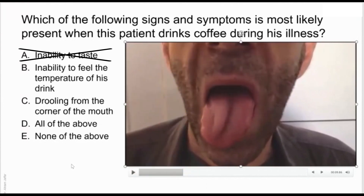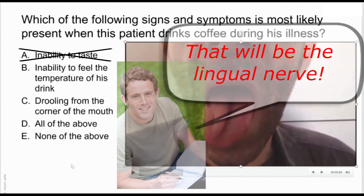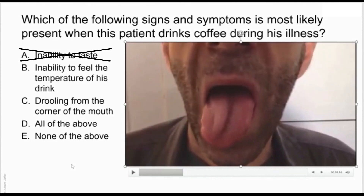Option B: inability to feel the temperature of his drink. Which nerve is responsible for that? The lingual nerve anteriorly — anterior two-thirds — and the glossopharyngeal and vagus posteriorly. These are general, not special, sensations. Since none of those nerves were affected, he will continue to feel temperature when he touches his tongue. He will still be able to feel the temperature of his drink.